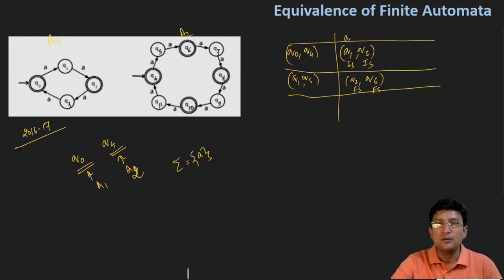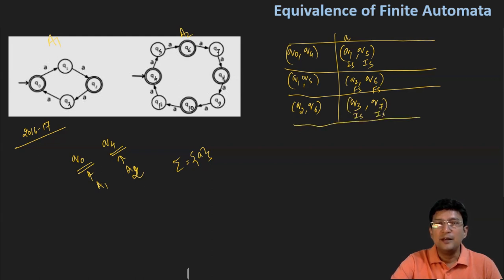There is no discrepancy, so we move ahead for more computations. The new pair generated is Q2 and Q6. By taking symbol A in Q2, I move to Q3, and by taking symbol A in Q6, I move to Q7. Q3 and Q7 are both intermediate states, so I can move ahead for more computations.